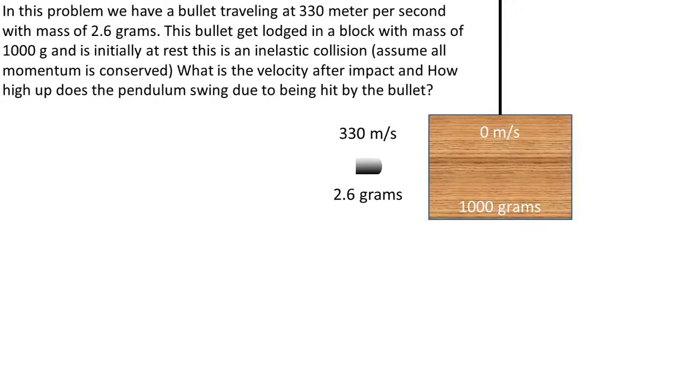In this problem, we have a bullet traveling at 330 meters per second with a mass of 2.6 grams. This bullet gets lodged in a block with a mass of 1,000 grams that has a rigid massless bar attached, making it into a pendulum. The initial velocity of this block is zero.